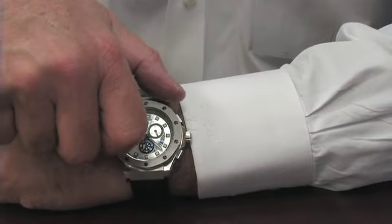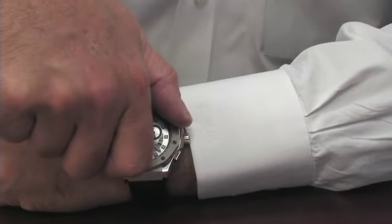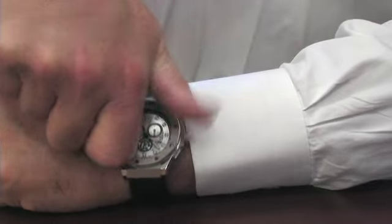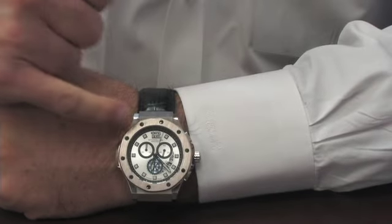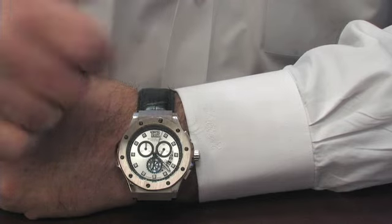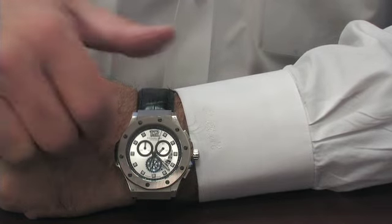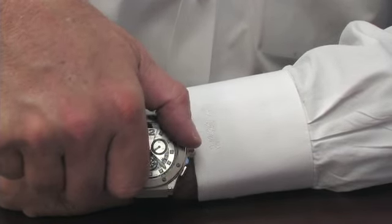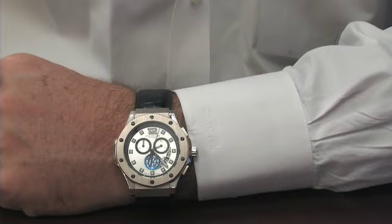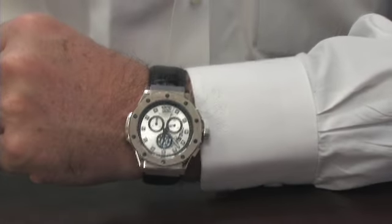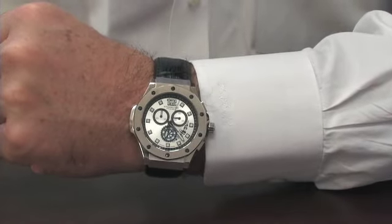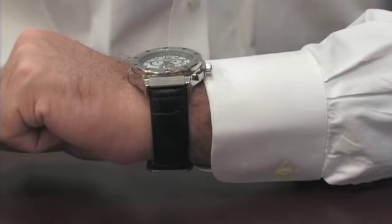Now, if you turn it past that click, you can force it past the click. And we've had calls on that. Why doesn't my screw line up? Because you forced it past the click. So, you don't want to force it. It will click in right there where it lines up. And it's on nice and solid. But do you see how it gives the watch a completely different personality now?